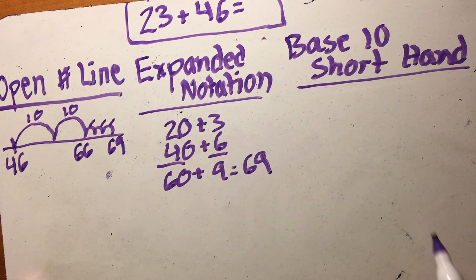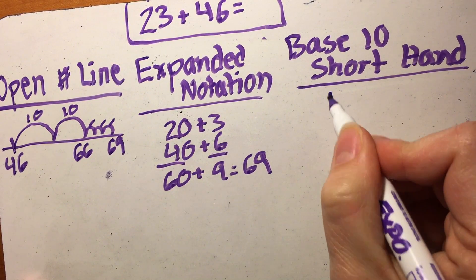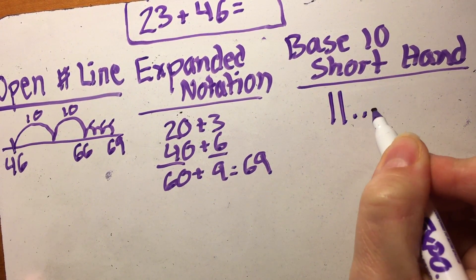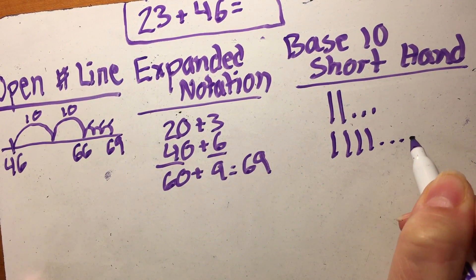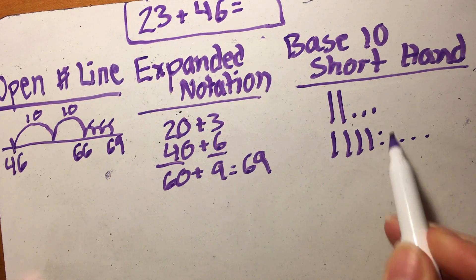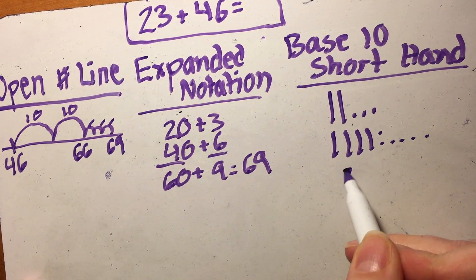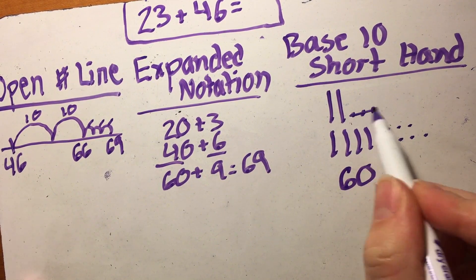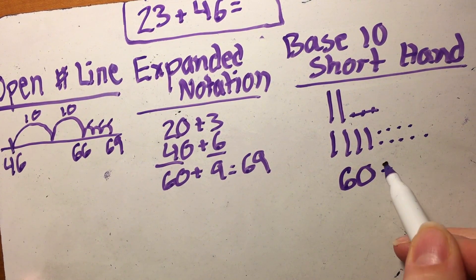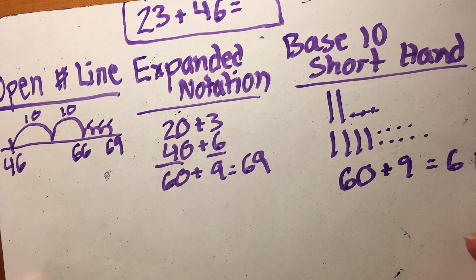And in base ten shorthand it will look like this: 10, 20, 1, 2, 3, 10, 20, 30, 40, 41, 42, 43, 44, 45, 46. Again I set that up in base ten shorthand. So count up my tens first, I get 60. I'm going to put my 3 in there just so I can see it very quickly that it's 9. My answer is 69.